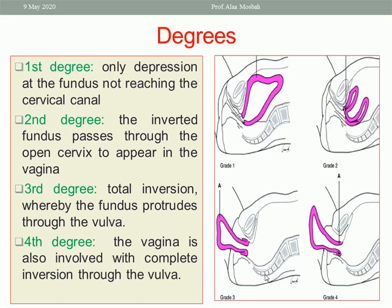We have four degrees. The first degree: there is just cupping of the fundus — a depression — but not reaching the cervical canal. In the second degree, this cupping increases so inversion reaches the cervical canal and passes through the open cervix. In the third degree, the whole uterus passes outside the vulva — complete total inversion. In the fourth degree, the whole uterus is outside along with the vagina.